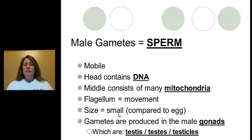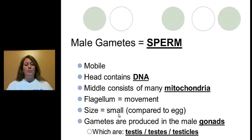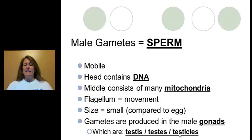Compared to the egg in size, sperm is relatively small because during cytokinesis in meiosis, the egg gets all of the cytoplasm and three polar bodies are produced. In sperm meiosis, the cytoplasm is equally distributed between the four cells. The gametes — the sperm — are produced in the gonads, which are the testes. You can also use the term testicles; any of those terms would be acceptable.